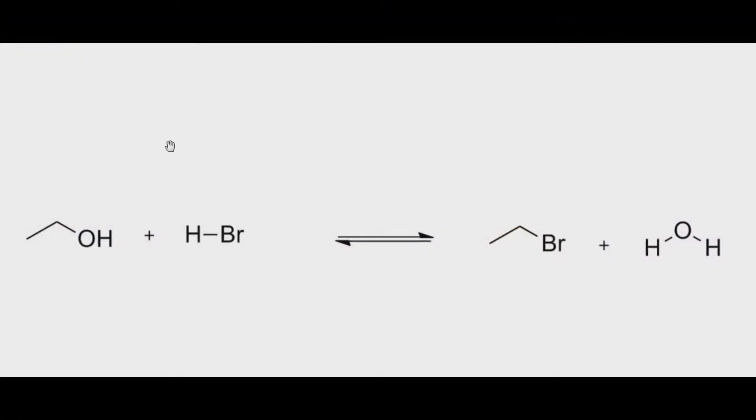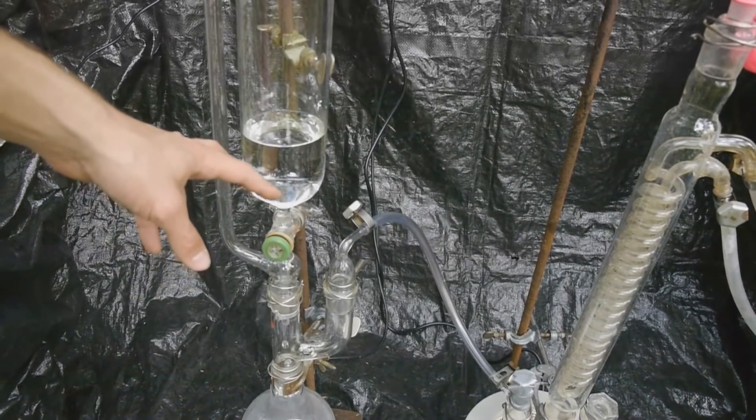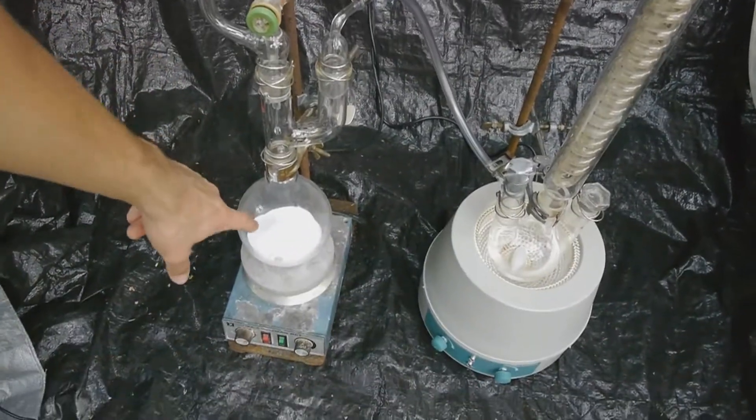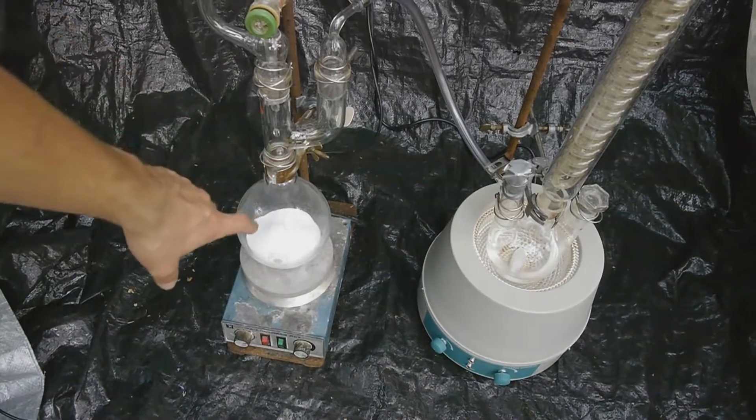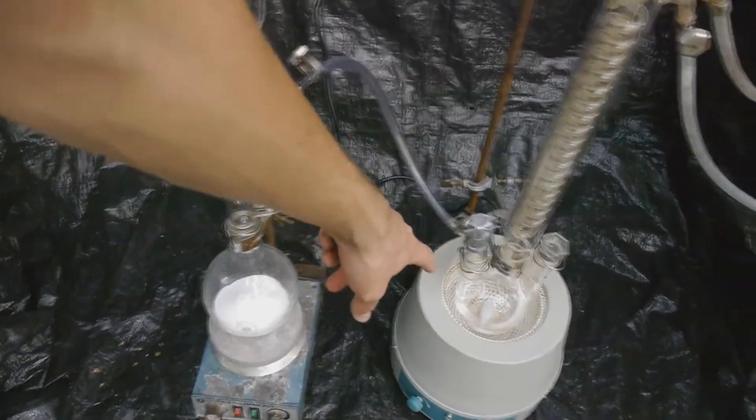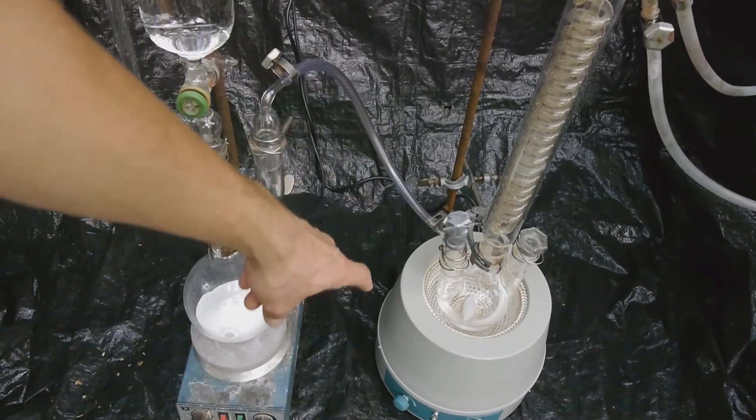In order to make ethyl bromide, we need to react the ethanol with some form of hydrobromic acid. The byproduct forms water in an equilibrium reaction, so I figured it would be best to react the ethanol with anhydrous HBr gas. To make the HBr gas, I just wanted to react some 85% phosphoric acid with sodium bromide, and built this big apparatus to lead the HBr gas into some boiling ethanol.